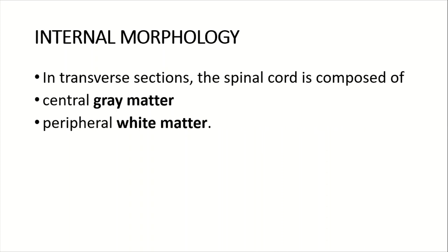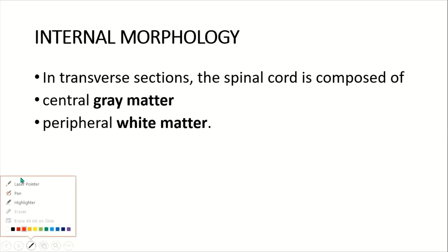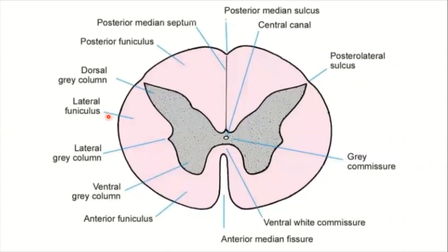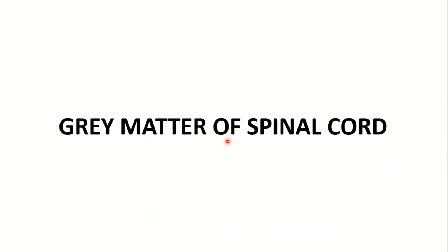When we take a transverse section of the spinal cord, it has a central gray matter and a peripheral white matter. The central gray matter is H-shaped or butterfly-shaped, and surrounding it on the periphery is the white matter. In the center is the central canal, which contains cerebrospinal fluid.